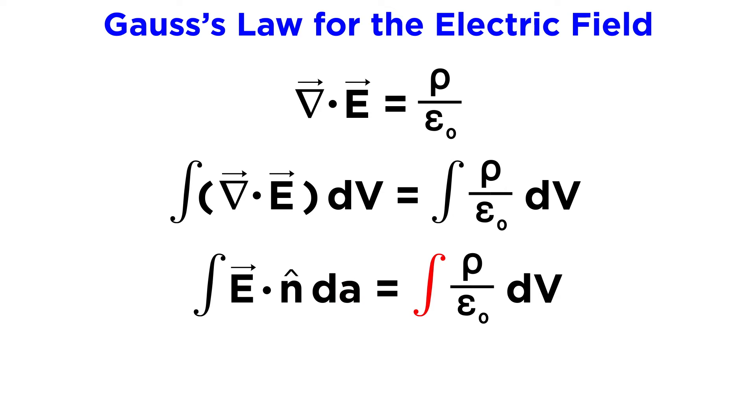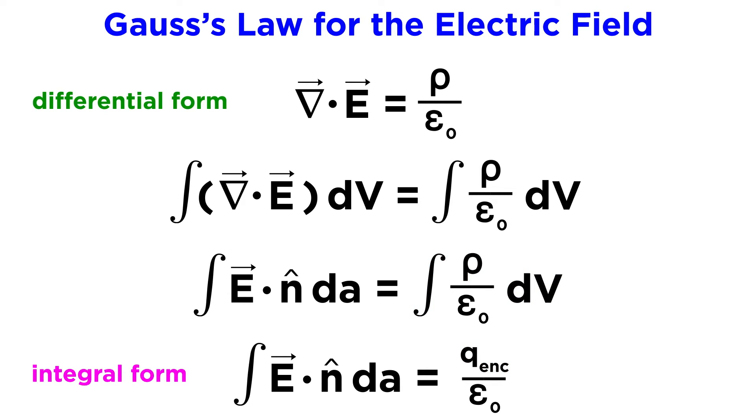Then the final step is to reduce the integral on the right side. Knowing that epsilon naught is a constant, and the charge density rho taken over the entire enclosed volume is simply the enclosed charge q, that will leave us with this. And there we have the integral form of this law.